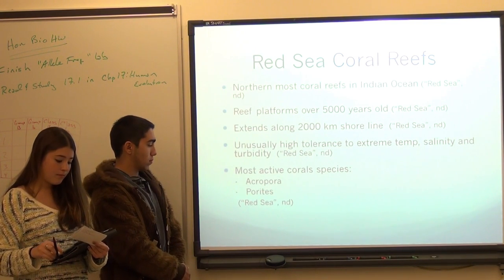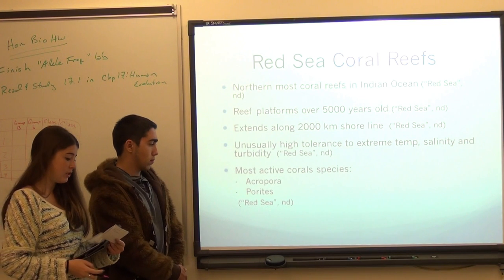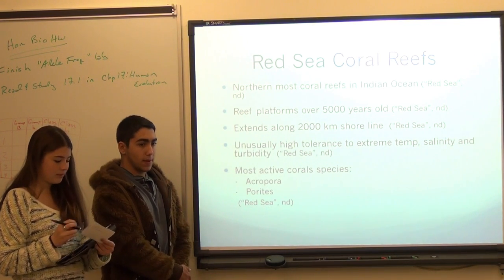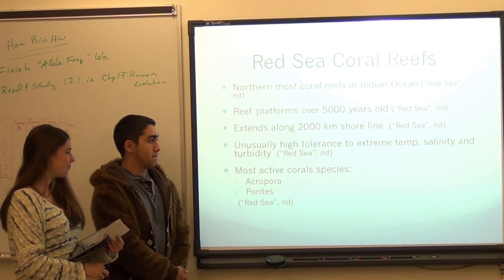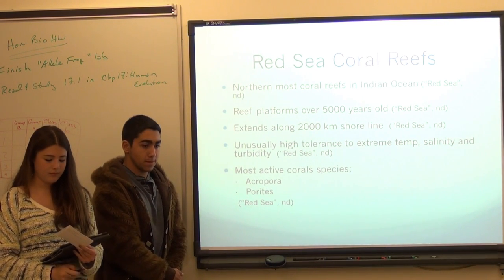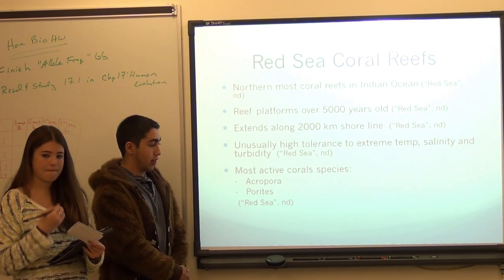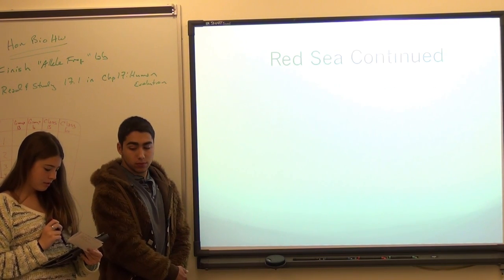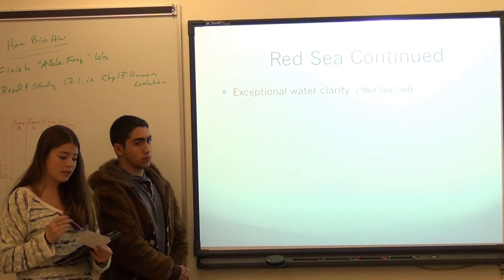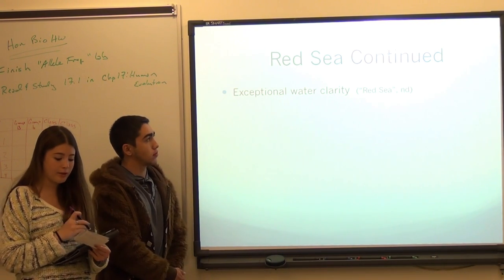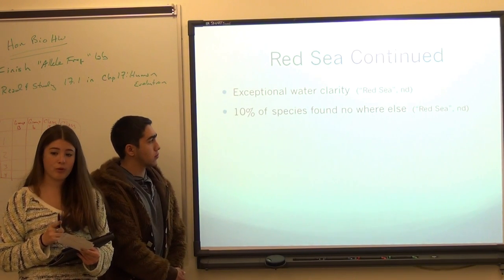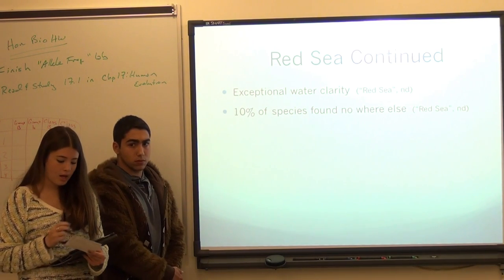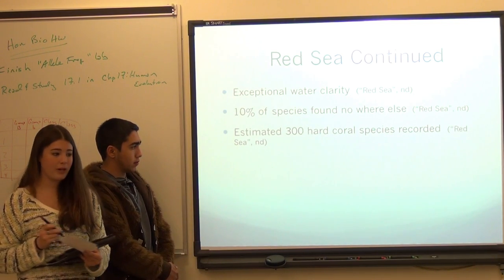The dominant, most actively growing corals include species of the genera Acropora and Porites. In the Red Sea, the water is exceptionally clear due to lack of river discharge and low rainfall. Out of about 1,200 recorded reef fish, around 10% are endemic, meaning they're found nowhere else. There are about 300 hard coral species recorded in the Red Sea.